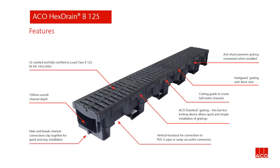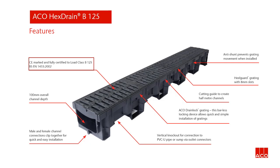Next in the Hex Drain range is the Akko Hex Drain B125 channel assembly. Akko Hex Drain B125 is manufactured from recycled polypropylene. With its polypropylene composite grating it is certified to load class B125. It has many of the same features as the standard Akko Hex Drain, but built for this heavier load class. The key feature is the Akko Drain Lock grating — this barless locking device allows for quick and simple installation of gratings. CE marked and fully certified to load class B125.